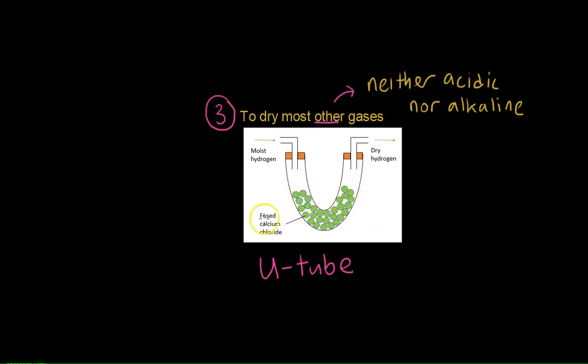Inside them we actually place fused calcium chloride. This substance will actually take away the moisture of whatever gas is being passed through. In the case of hydrogen, when it's being passed through, its moisture will be taken away by all this calcium chloride. And when it emerges from the other end, it will come out as dry hydrogen. And that's what we want.